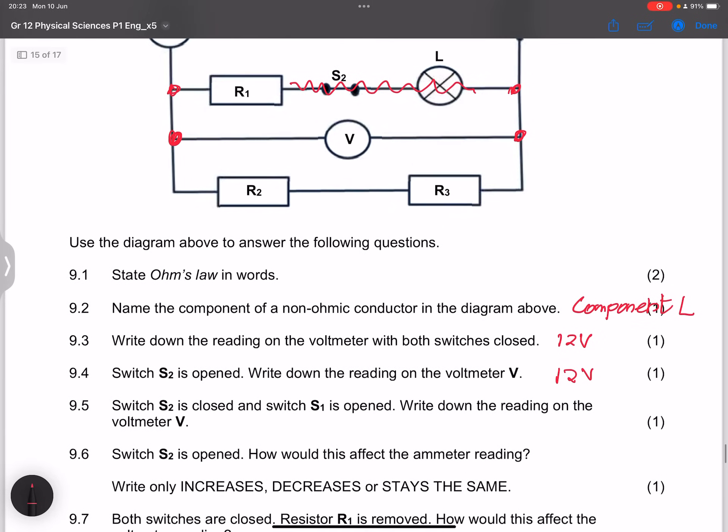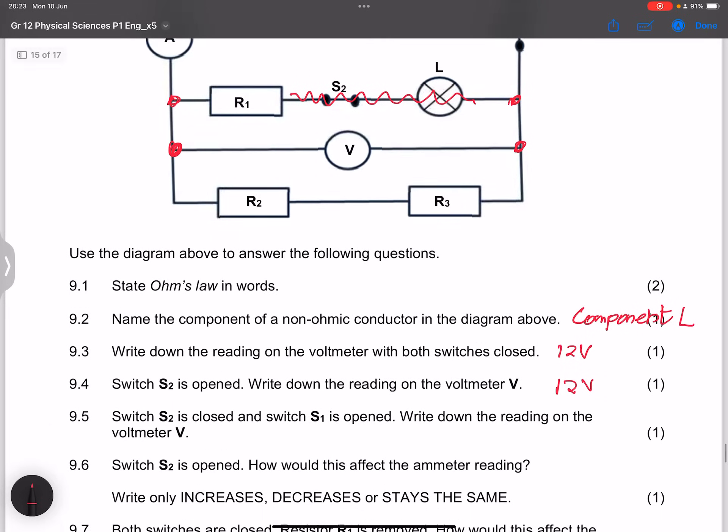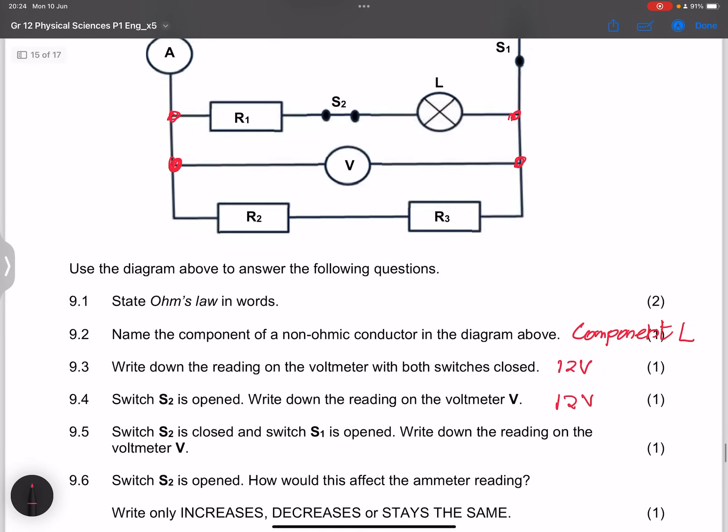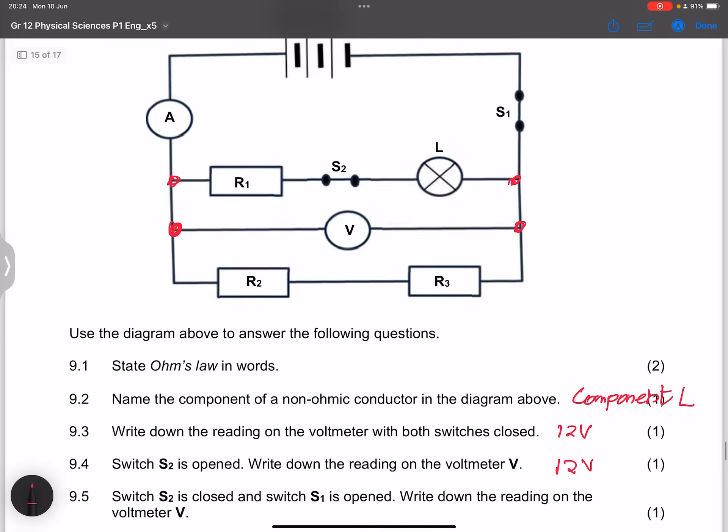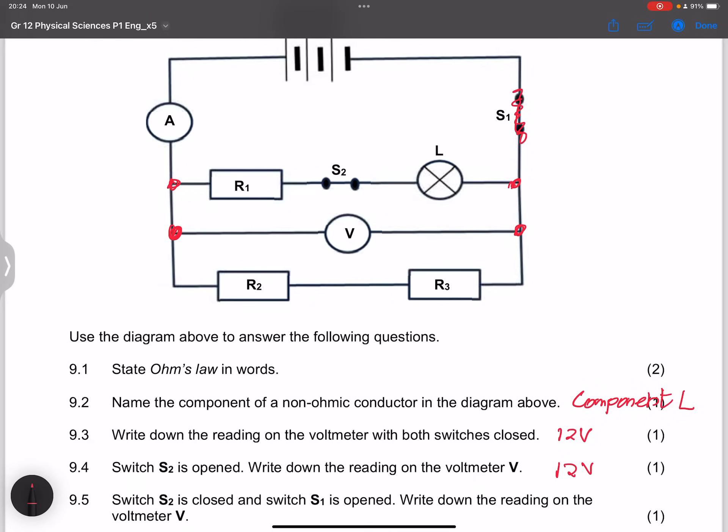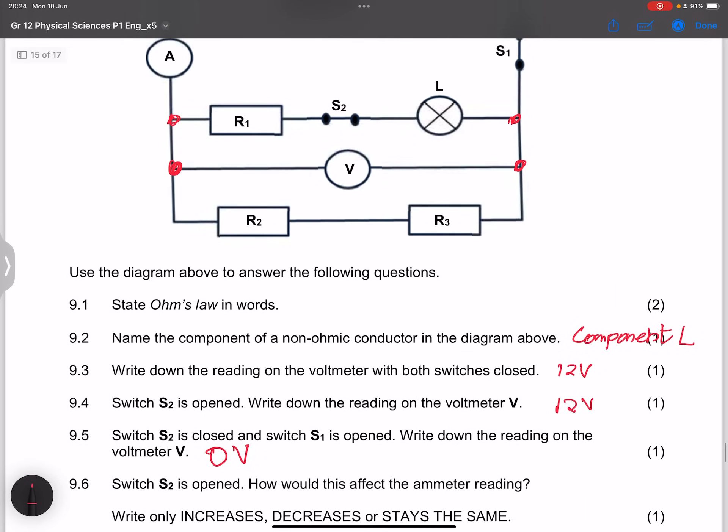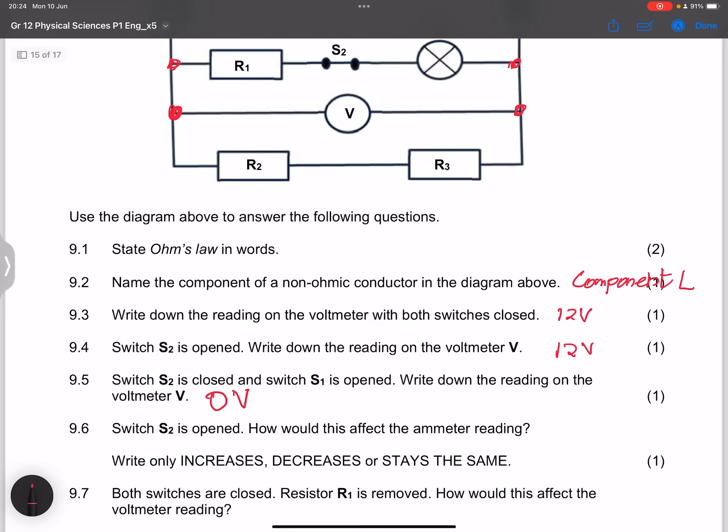The next one says switch S2 is closed, so which means we would have current there, but they said S1 is opened. Now note when switch S1 is open, it means there's no current that's flowing into our circuit. They say write down the reading on the voltmeter V, so that would be zero volts, since it won't be connected to the other side of the battery.